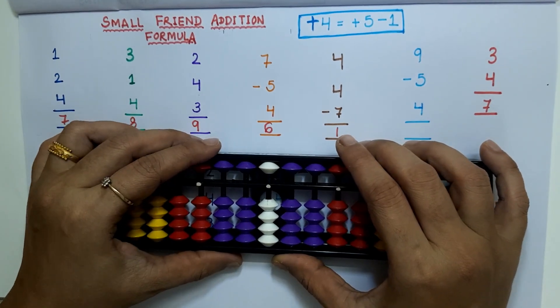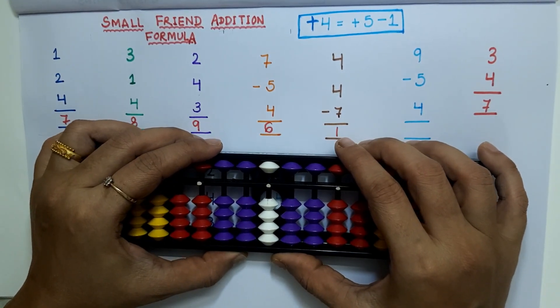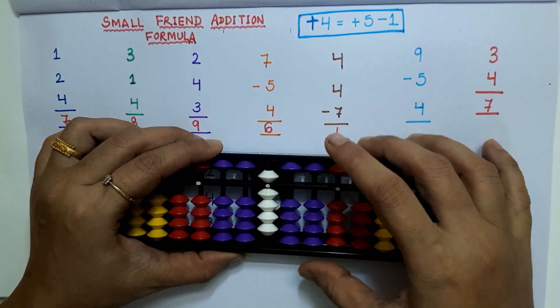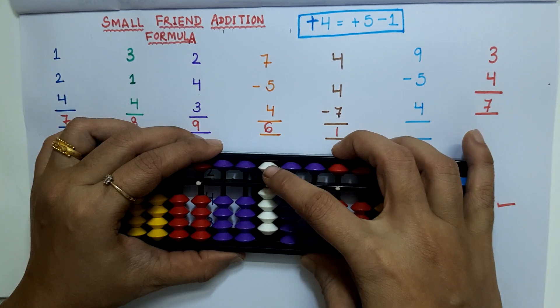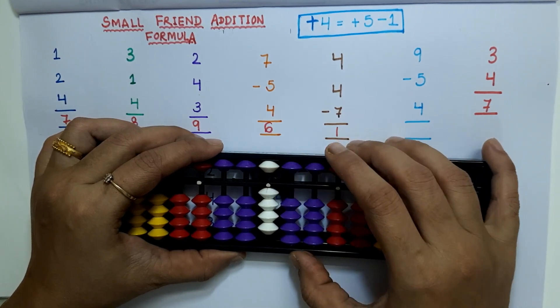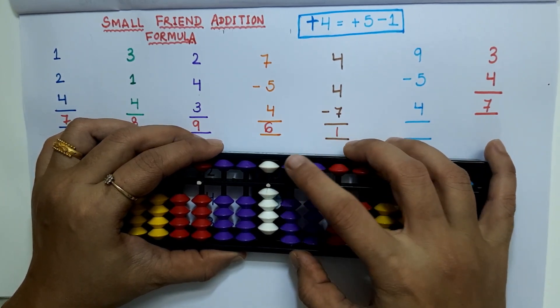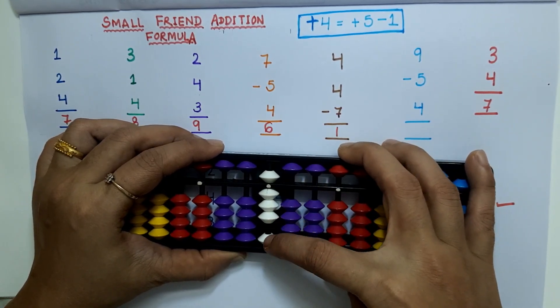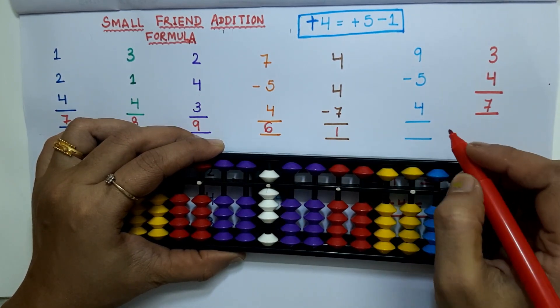Next example is 9 minus 5 plus 4. Applying the formula: plus 5 minus 1. The answer is 9.